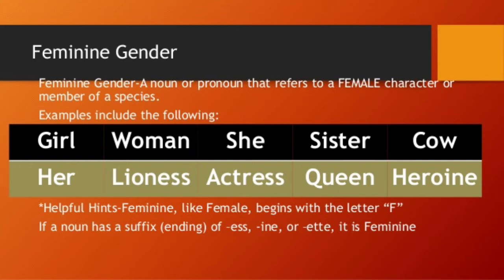Examples: girl, woman, she, sister, cow. The pronouns 'she' and 'her' tell us about a female character. The helpful hint: 'F' represents female. If a noun has a suffix ending in '-ess,' '-ine,' or '-ette,' it becomes feminine — for example, lioness, actress, heroine.